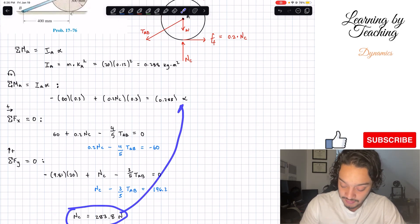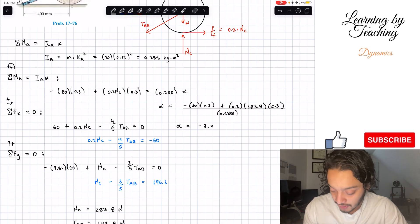What I'm going to do is utilize this N_C and plug it into my initial equation. I'm going to solve for my angular acceleration: negative 60 times 0.3 plus 0.2 multiplied by N_C which we found to be 283.8 multiplied by 0.3, and all of this has to be divided by 0.288. When we plug this into my calculator, we get a total of negative 3.375 radians per second squared.